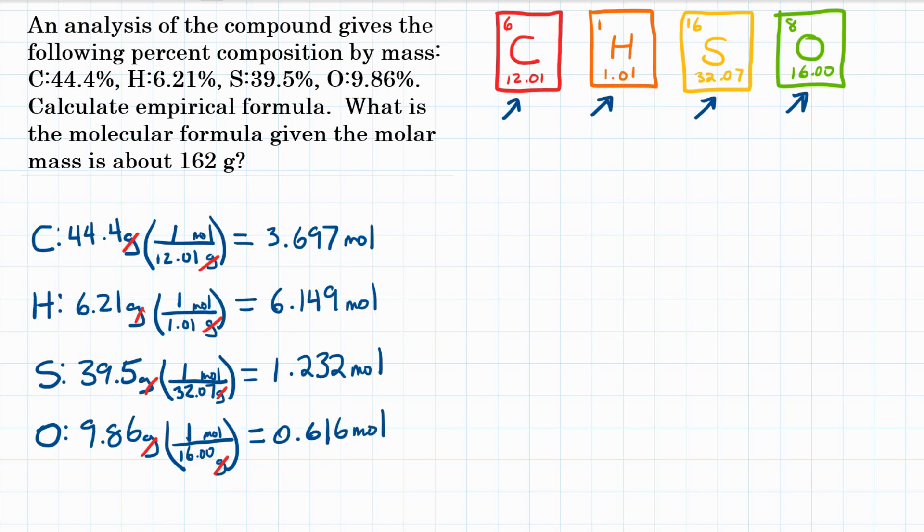So we have our mole ratios. These numbers don't look very pretty, though. So to make them better, to make them easier to use, we're going to divide each of these four numbers by whichever one is the smallest, and that would be oxygen's mole ratio 0.616. So we're going to divide all of these by 0.616.